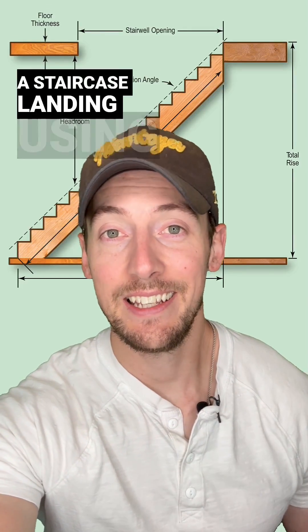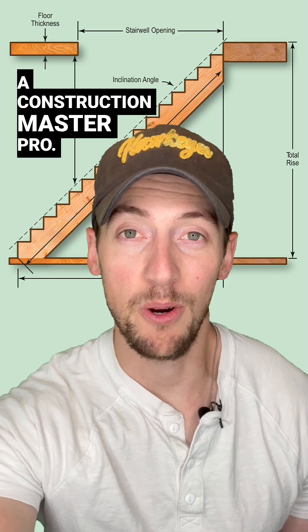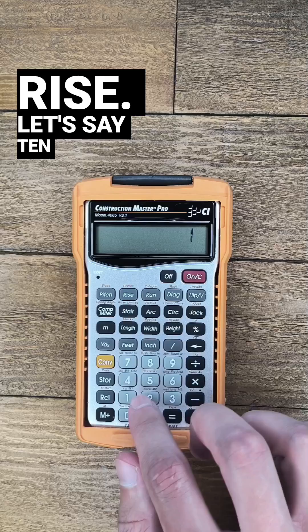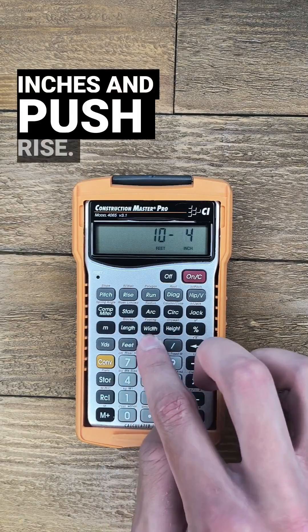Here's how you can work in a staircase landing using a Construction Master Pro. First enter the total floor-to-floor rise. Let's say 10 feet 4 inches and push rise.